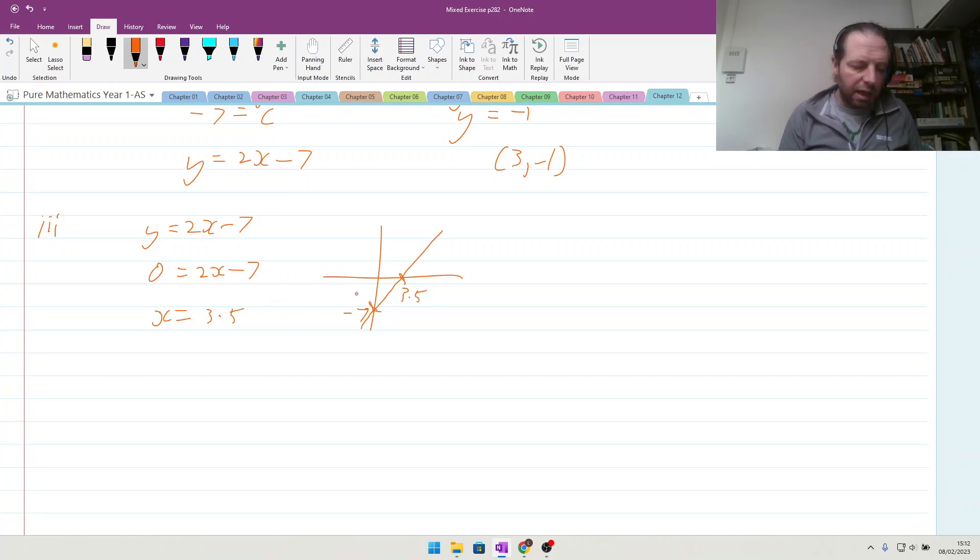So to find the length of this line which they have called r and s, we know that we've got a length of 3.5 and a length of 7. So we can do rs is equal to the square root of 7 squared plus 3.5 squared, square root 7 squared plus 2.5 squared, which gives us 7 root 5 over 2. So giving answer as a surd, done.